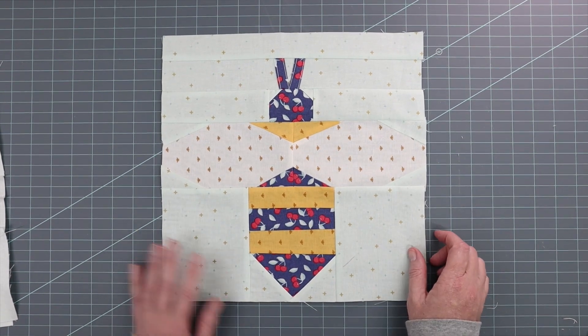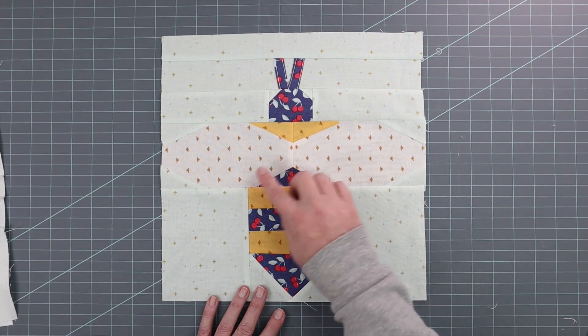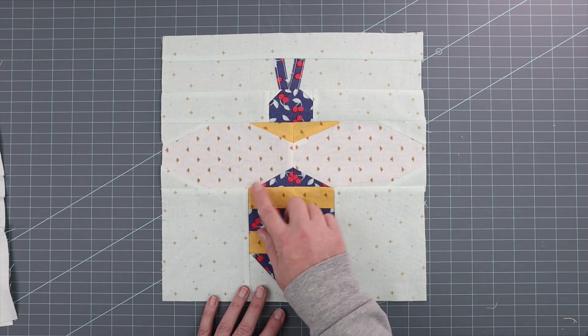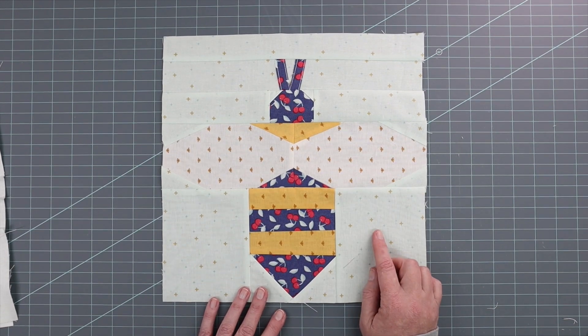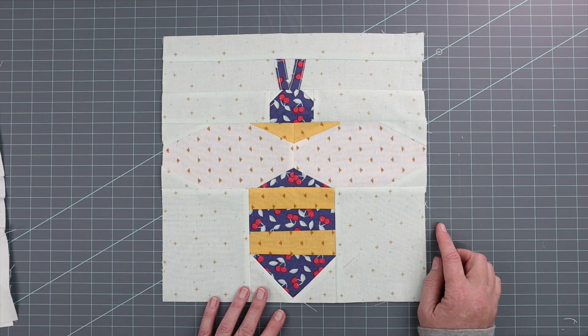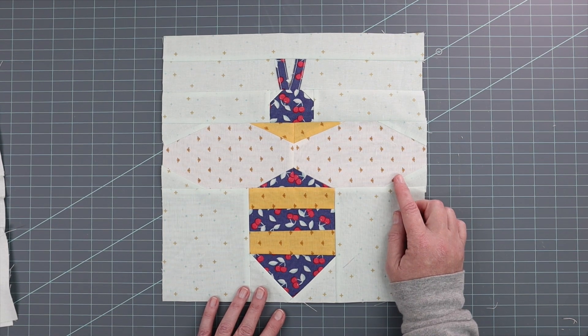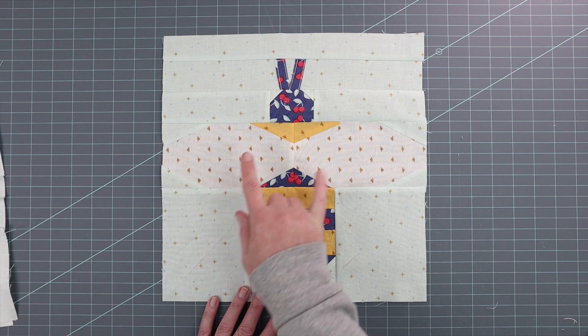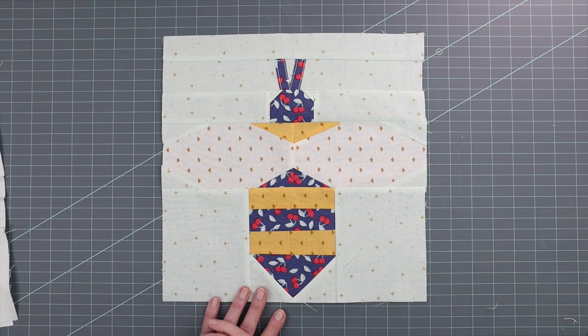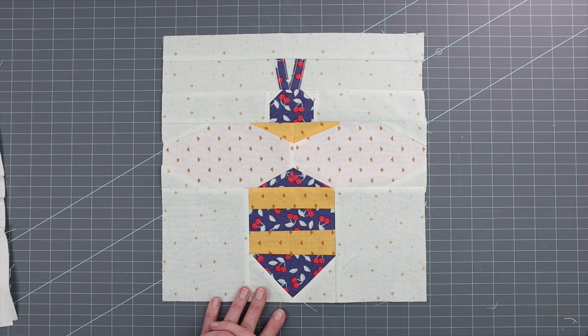The technique that's new this week for this block is how we created these wings. It's a simple technique that allows you to create an odd angle on a quilt block without using a foundation paper piecing pattern. You do need to cut these wing pieces from the template that's included at the end of the pattern.